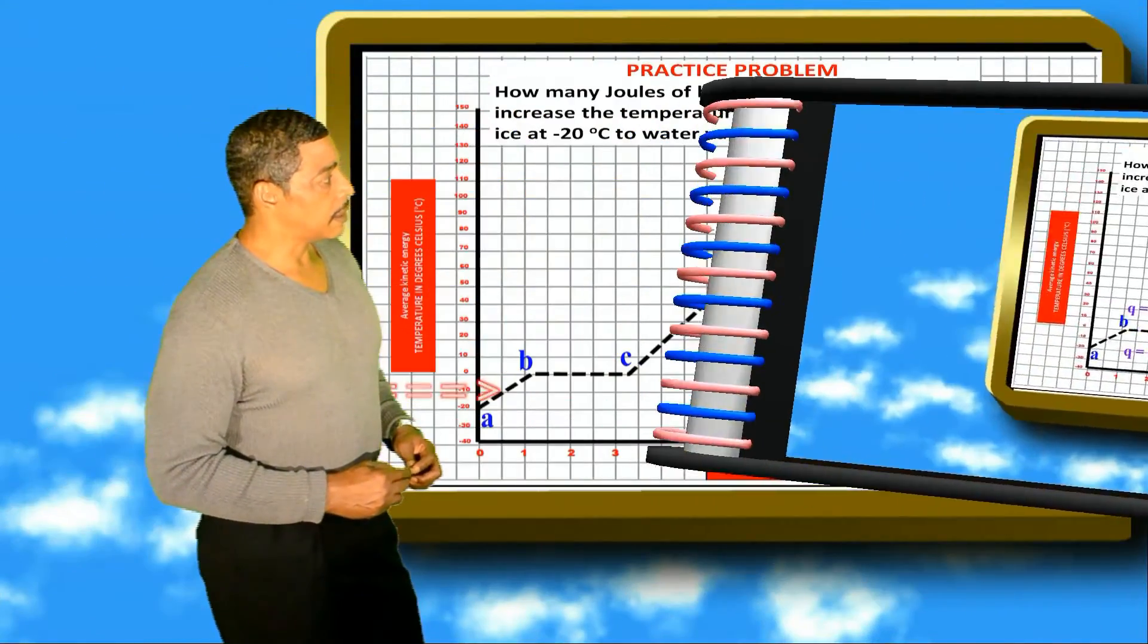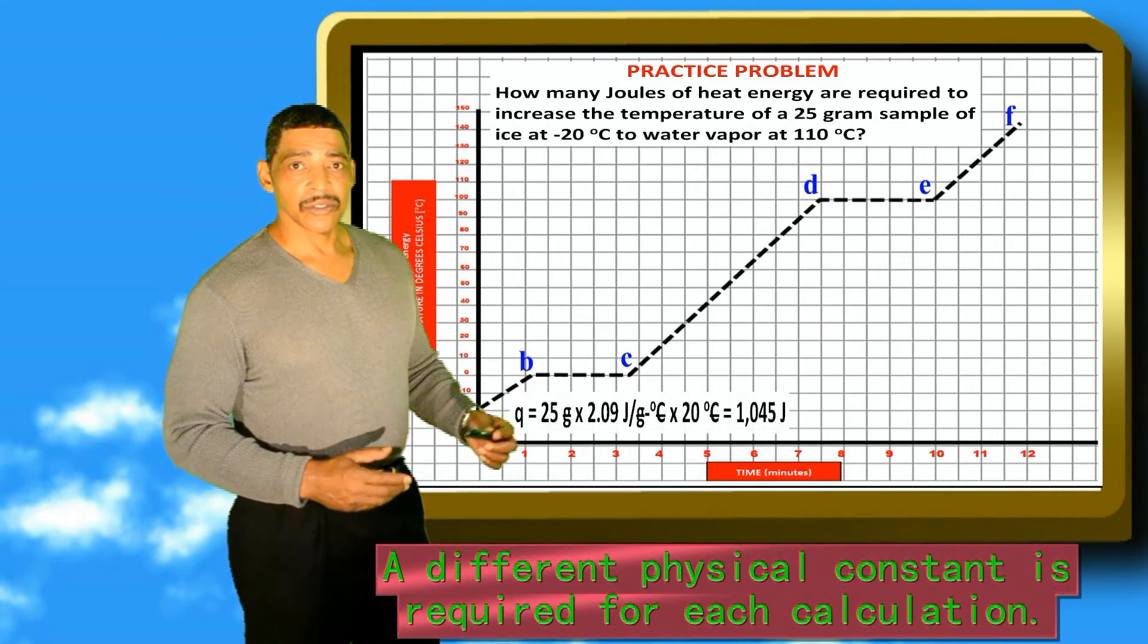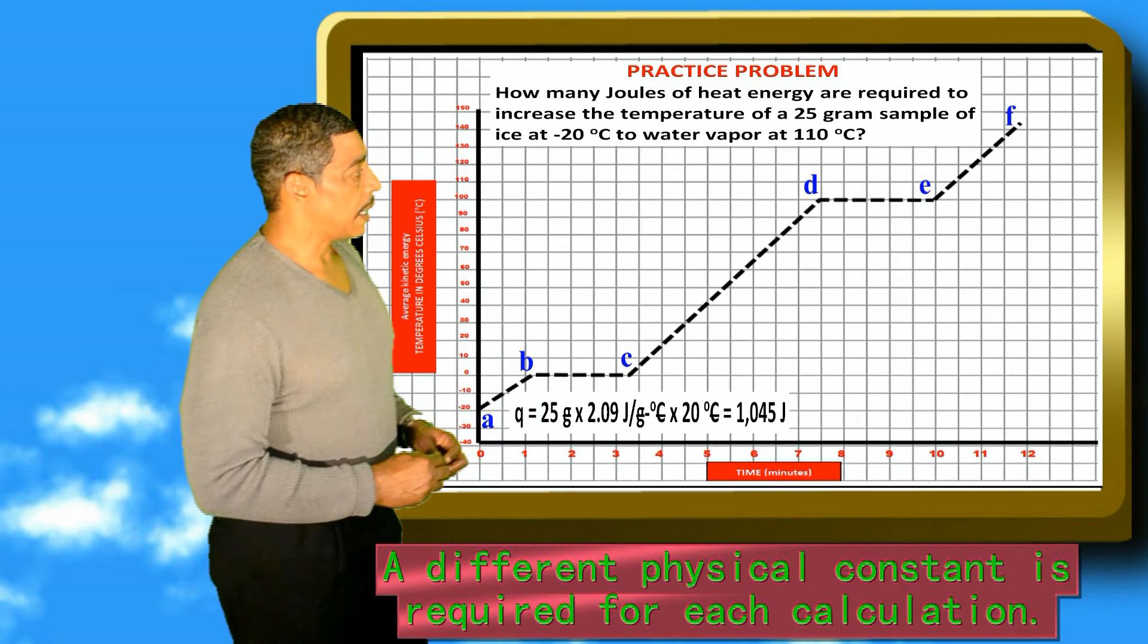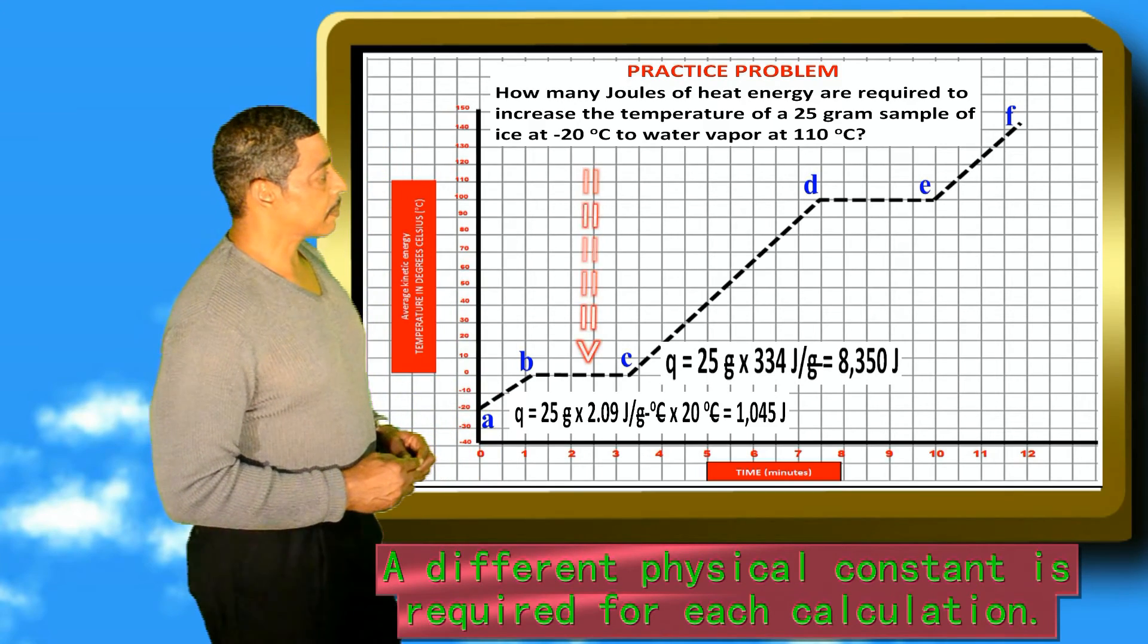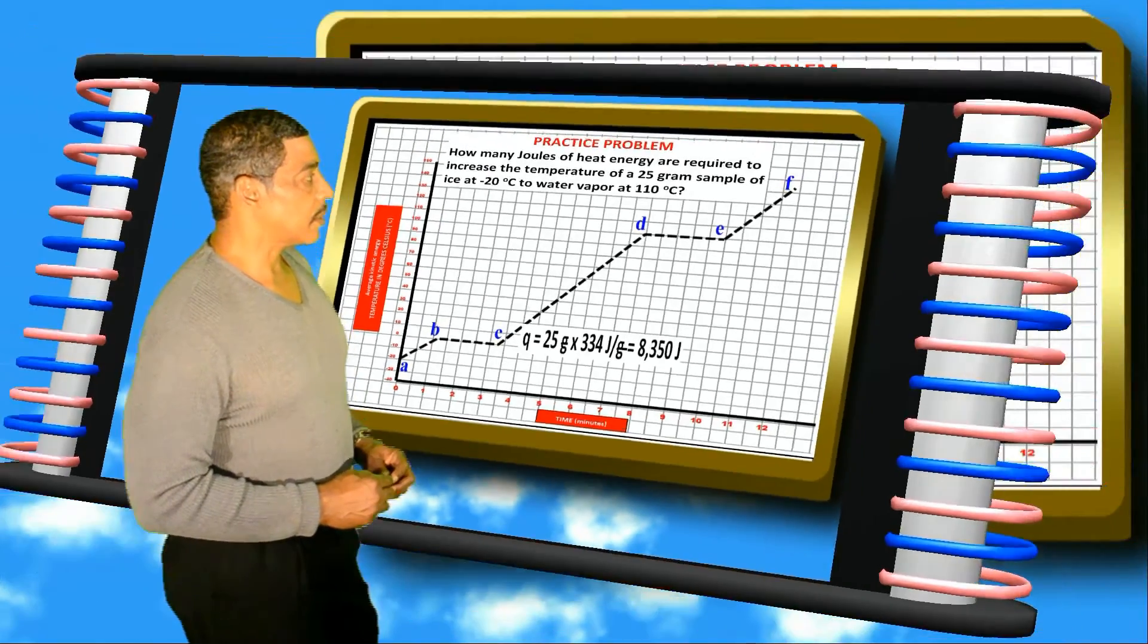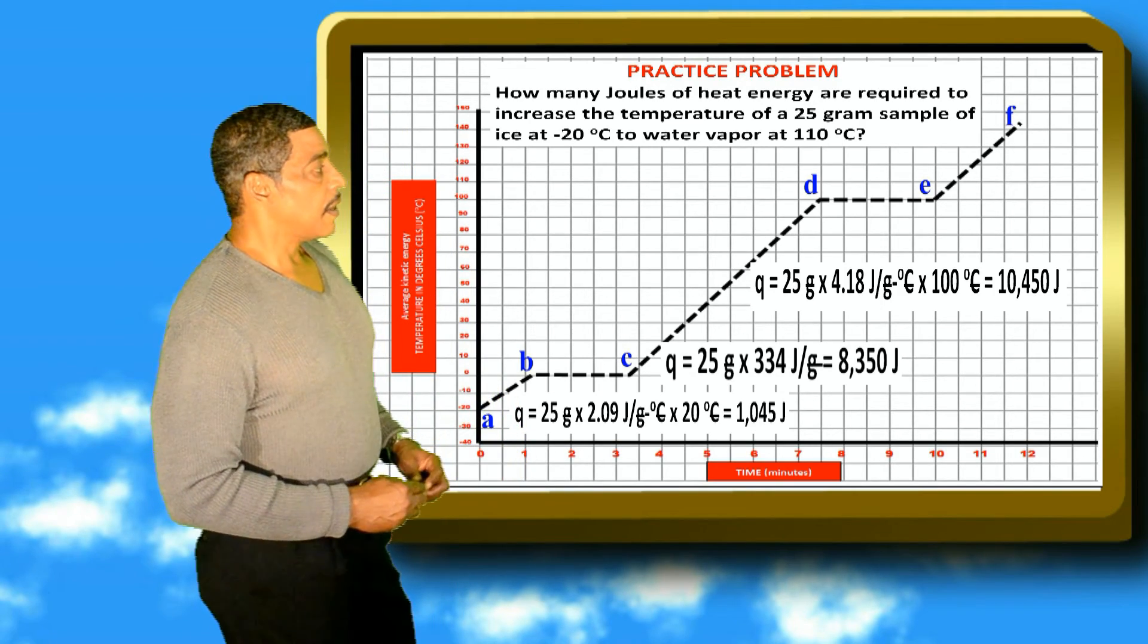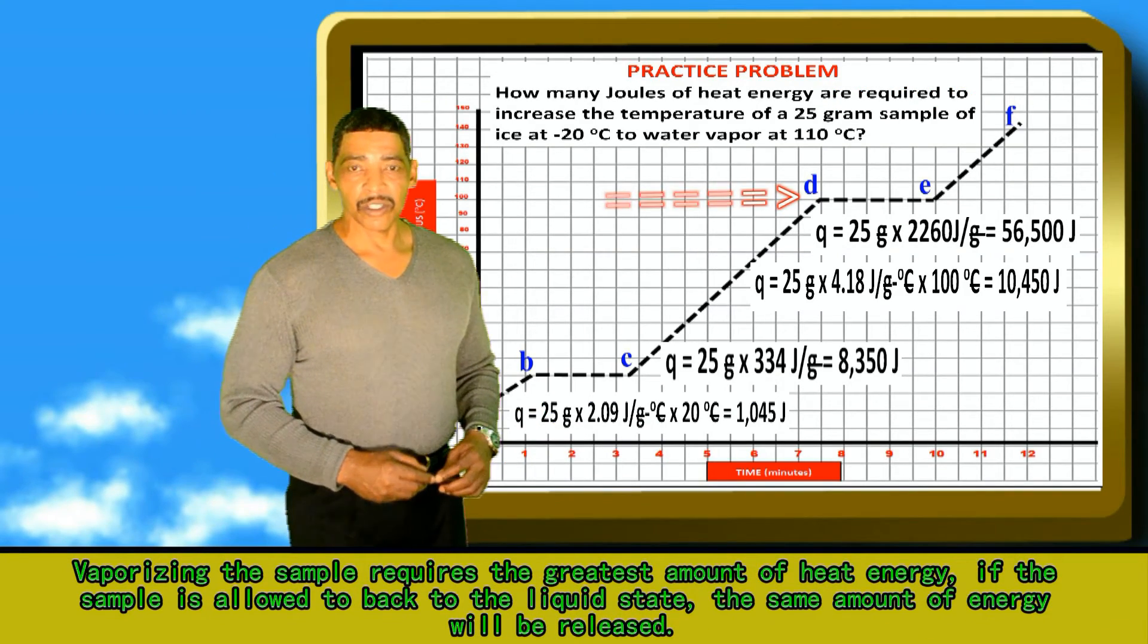Line segment AB requires 1,045 joules of heat energy to increase the temperature from minus 20 degrees Celsius to 0 degrees Celsius. In order to melt the sample at line segment BC, 8,350 joules are required. Now we must increase the temperature to 100 degrees. This requires 10,450 joules. Now vaporizing the sample requires 56,500 joules. Obviously this step requires the most energy.